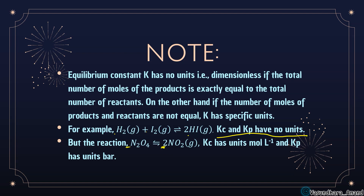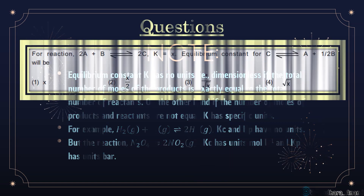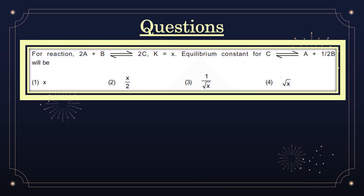For N2O4 ⇌ 2NO2: Kc = [NO2]^2 / [NO2O4]^1. The concentration unit is mol/L, so Kc = (mol/L)^2 / (mol/L) = mol/L. Therefore Kc has unit mol/L (mol per liter). Similarly Kp will have a unit in bar or atm or pascal — whatever unit of partial pressure is given. Now let's do some important and tricky questions frequently asked in entrance exams.